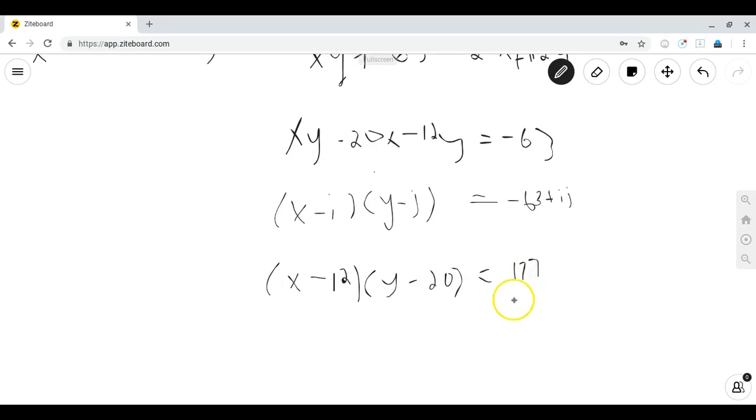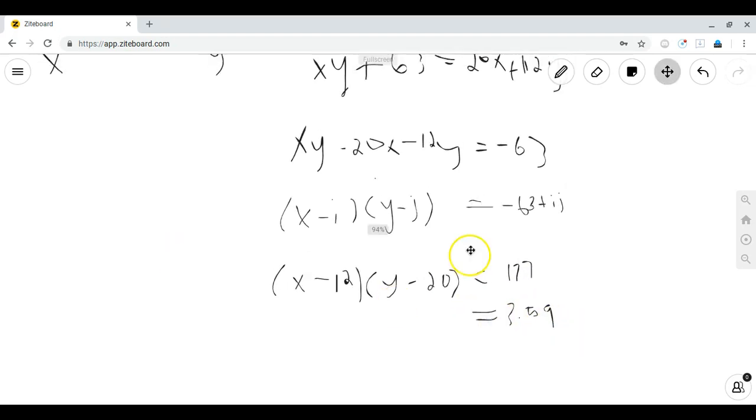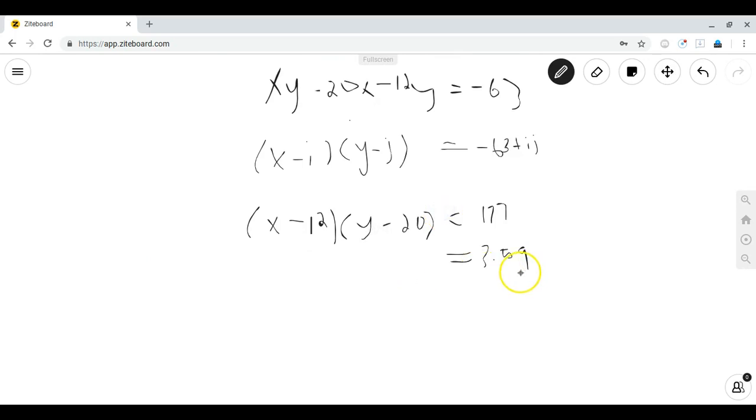Factoring 177 gives us 3 times 59. And so now we have x minus 12 times y minus 20 is equal to 3 times 59.